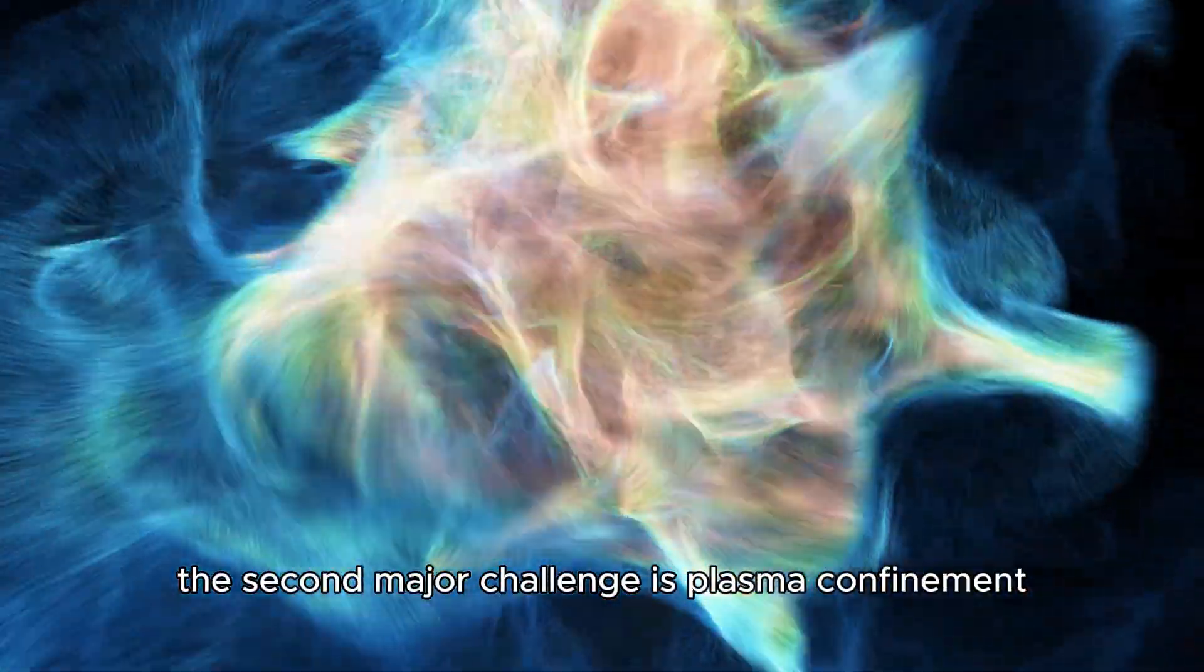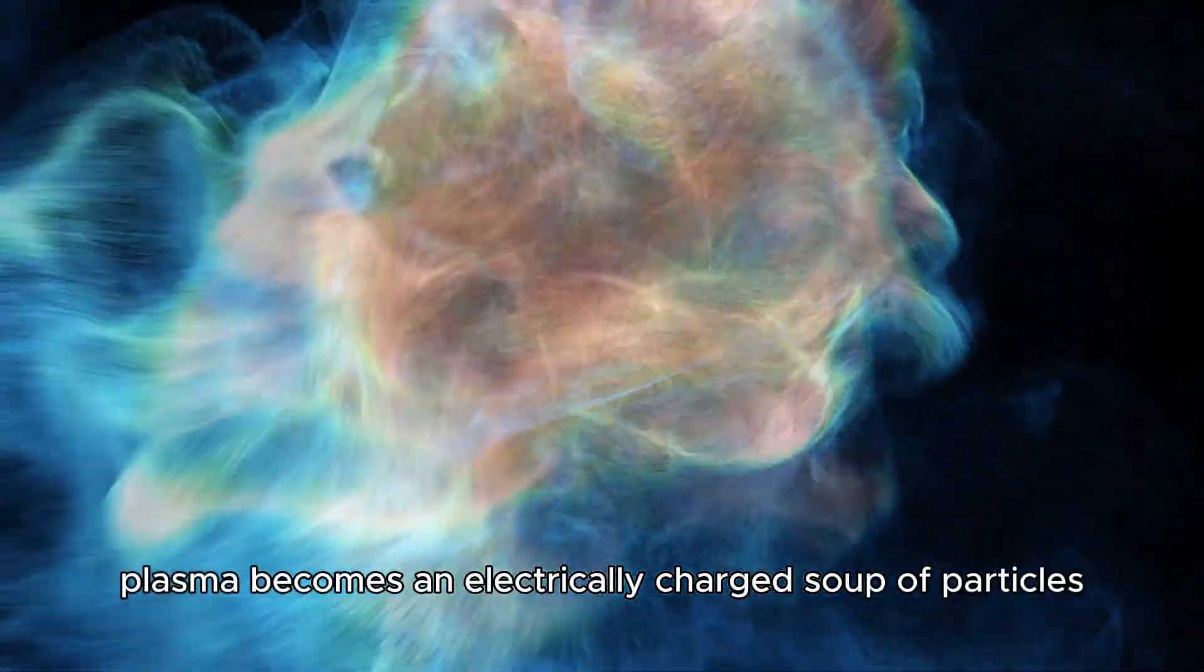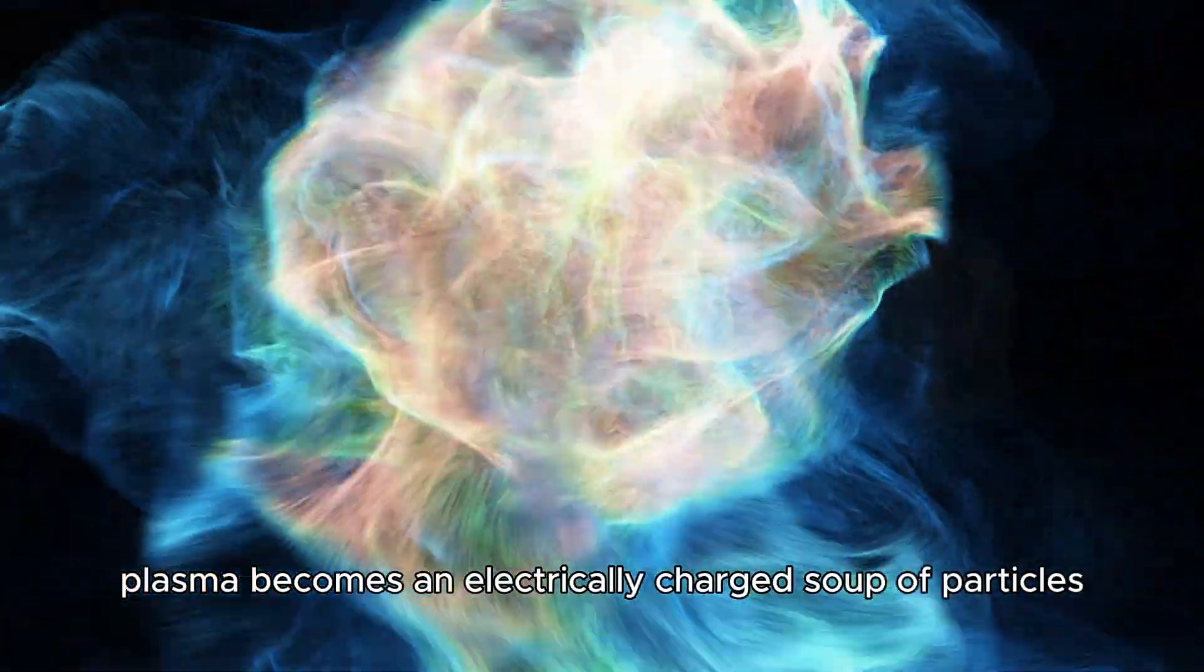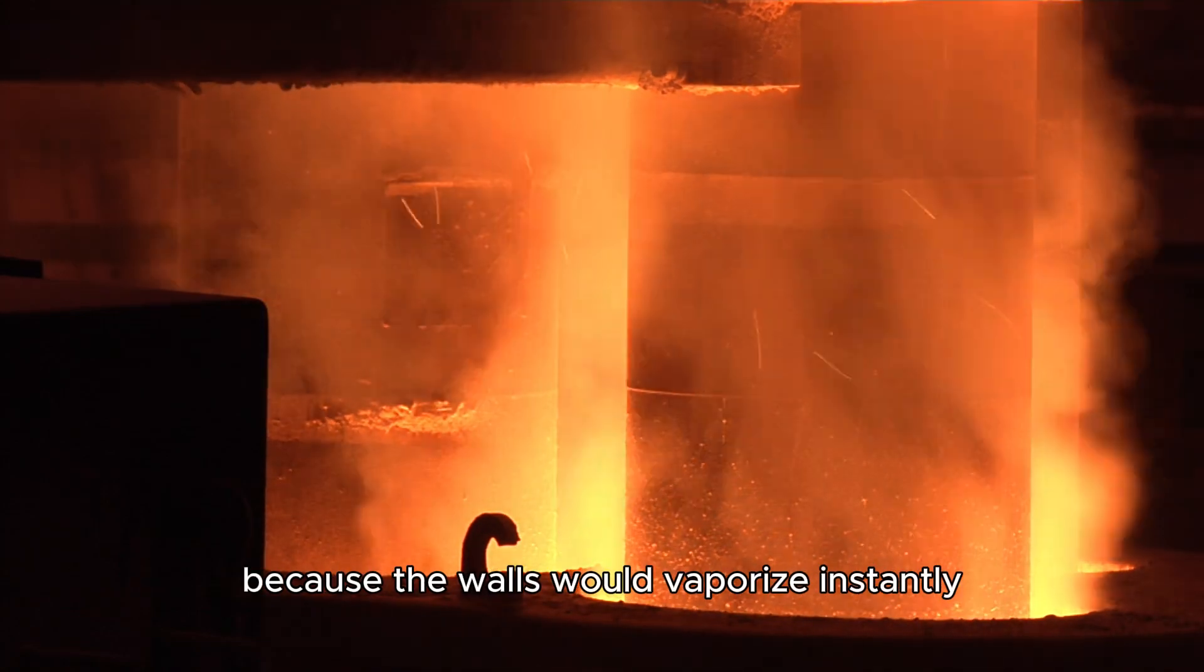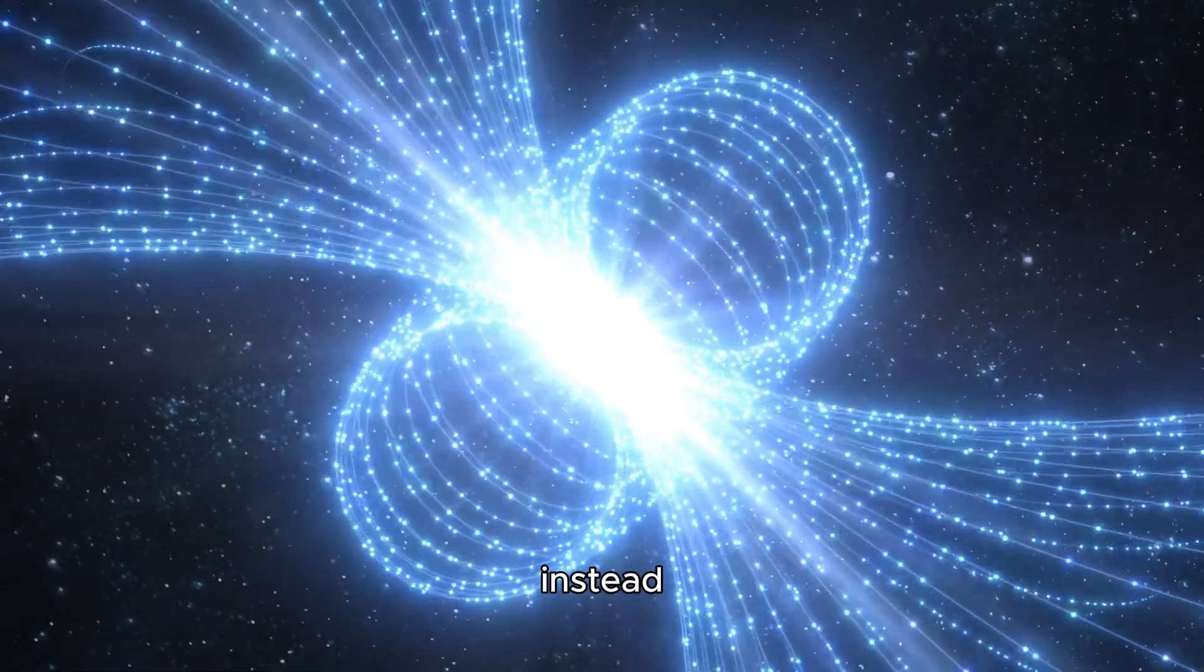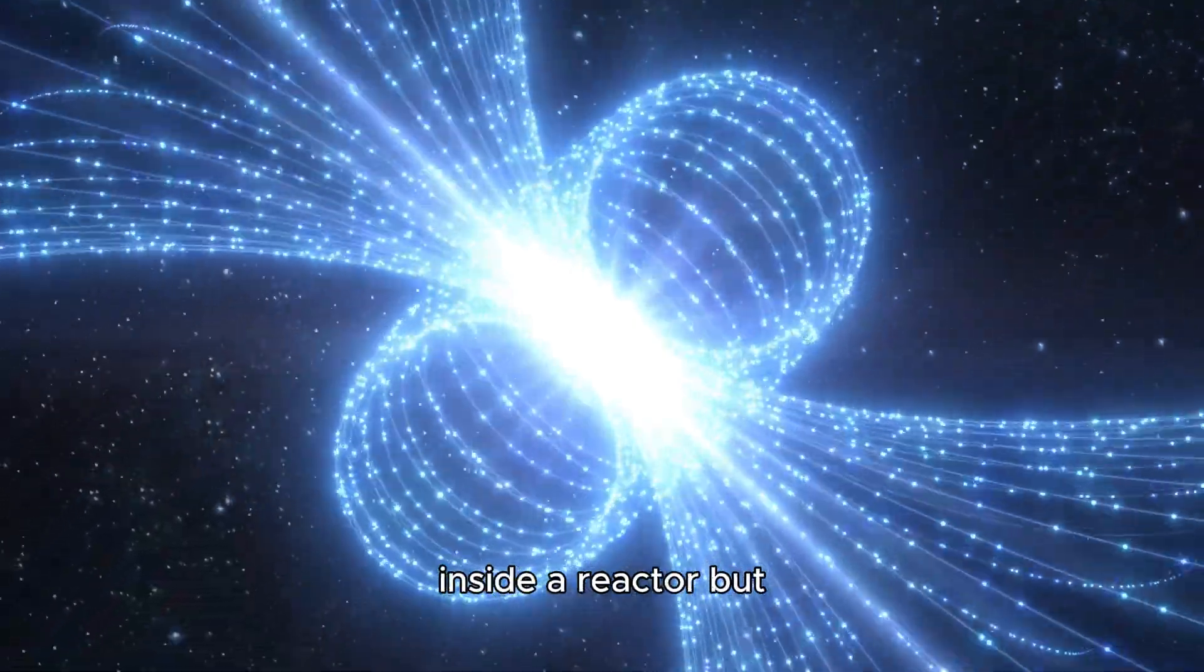The second major challenge is plasma confinement. At such high temperatures, plasma becomes an electrically charged soup of particles that's extremely volatile. It can't be contained by any solid material because the walls would vaporize instantly. Instead, scientists use powerful magnetic fields to trap and control the plasma inside a reactor.